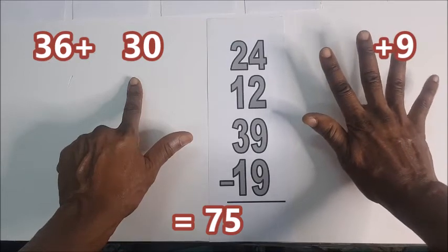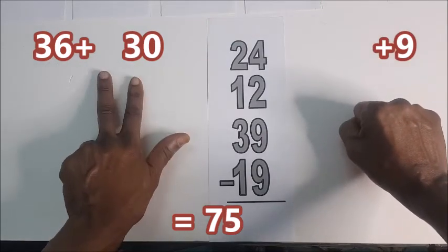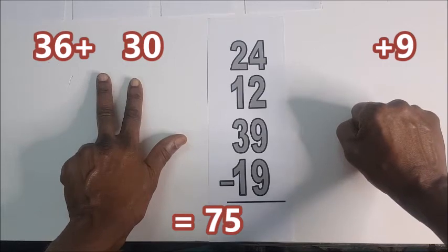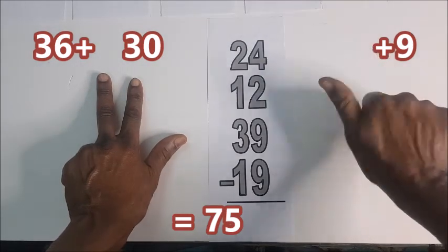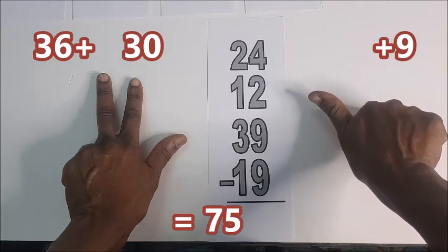Here is 9 now, so I fold here 4, 5, 6, 7, 8, 9, which is 75.